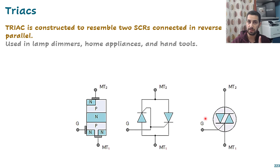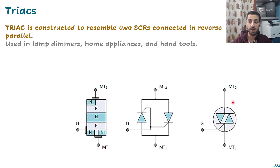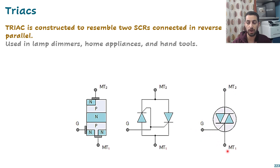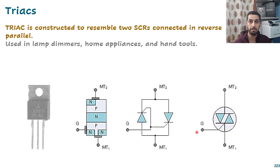There is an important practical point: that gate pulse should be referenced to MT1, not MT2. I personally used a triac before and tried to reference it to MT2, but it was all working wrongly. That is why I realized I should reference my pulse to MT1 — the voltage there should be referenced to MT1, not MT2 as many people do.